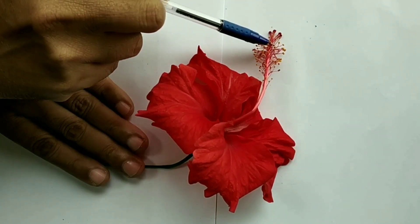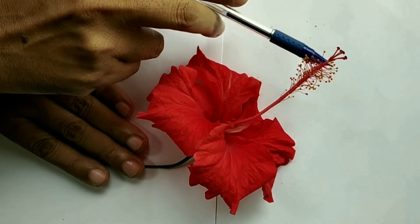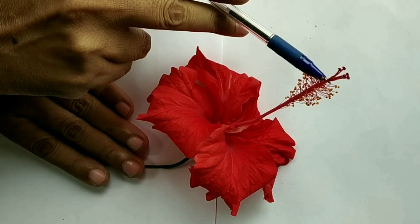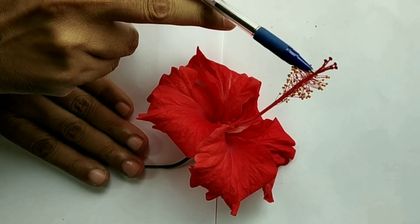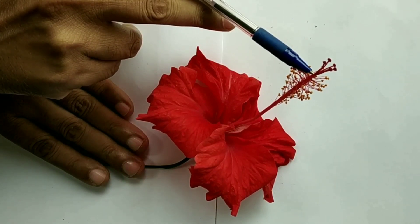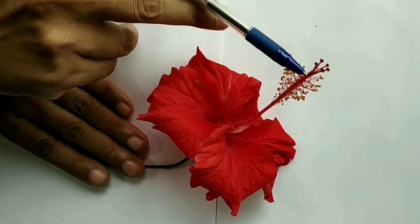See here, above this androecium, here is a stigma. This stigma, style, and ovary forms the gynoecium. And gynoecium is the female reproductive part of the flower.